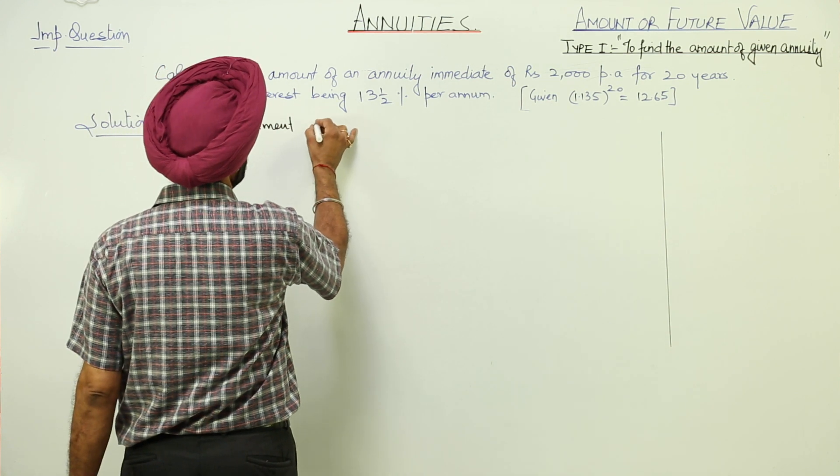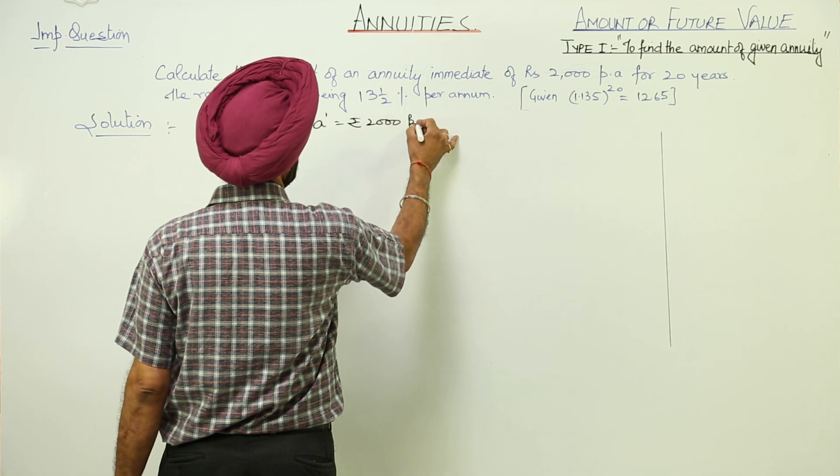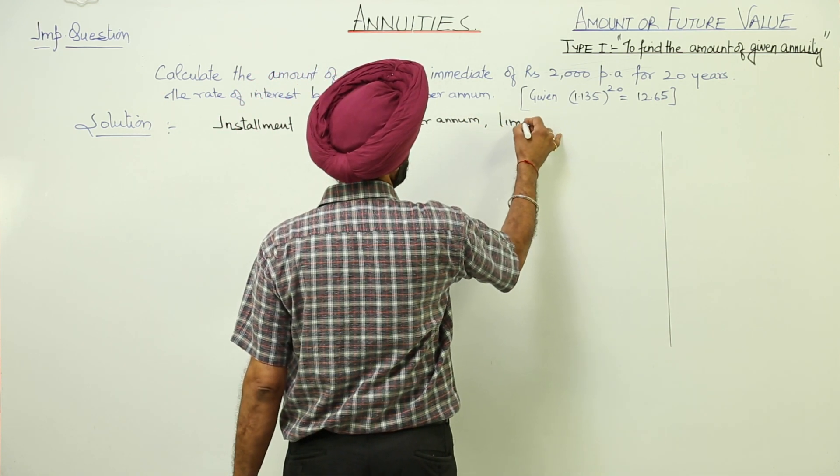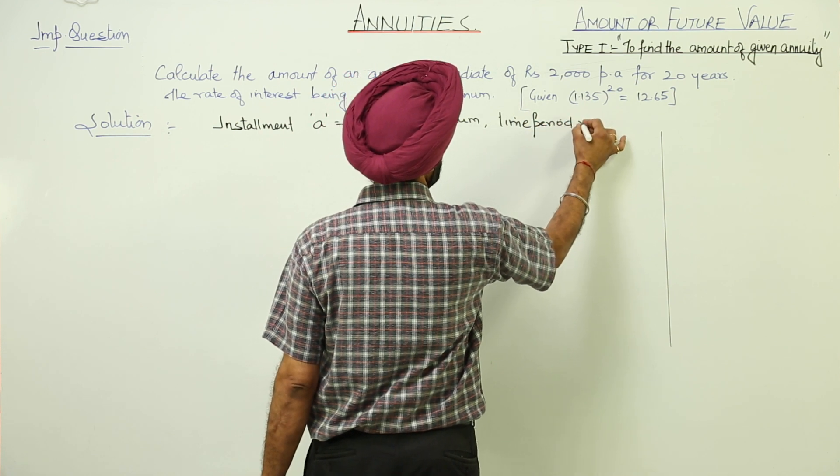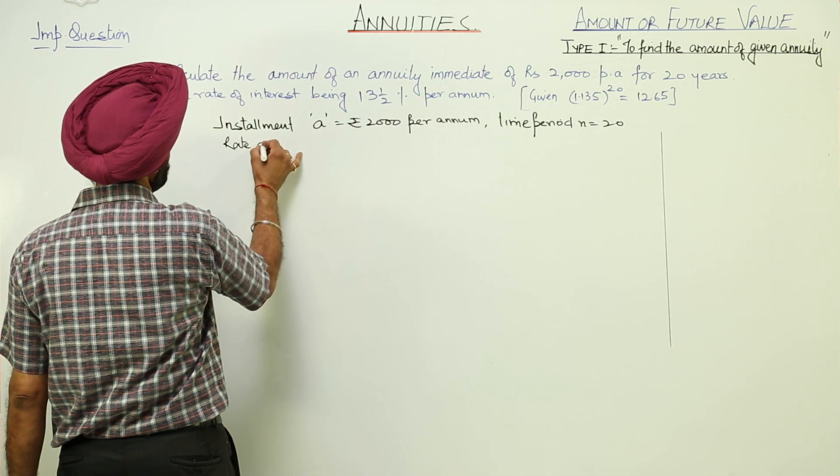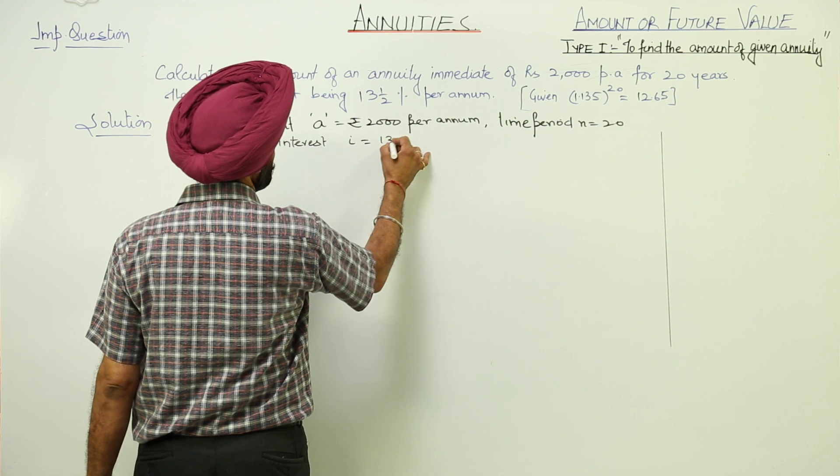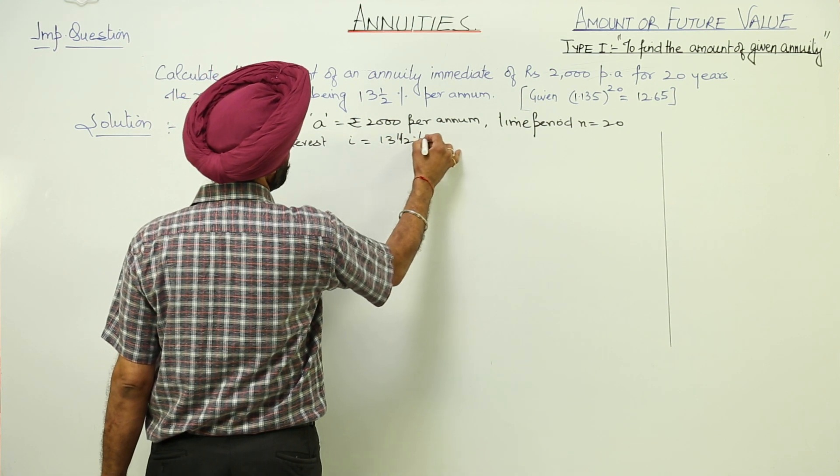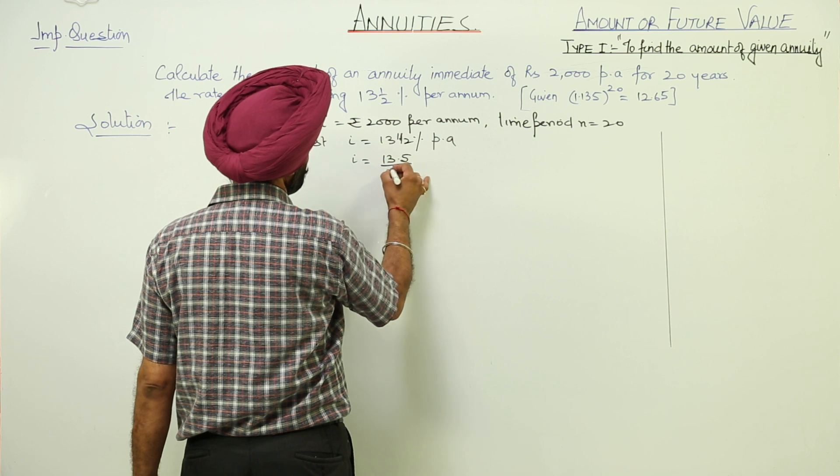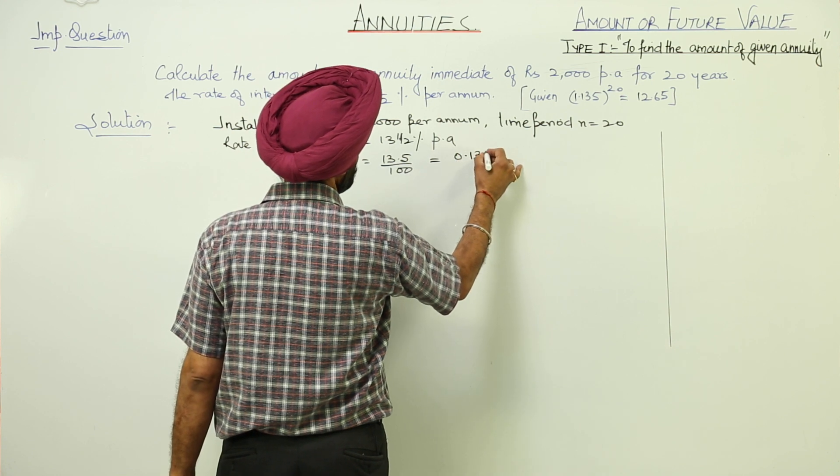Now, installment A is equal to rupees 2000 per annum. Time period N is equal to 20. The rate of interest i is equal to 13 and half percent per annum, or i can be written as 13.5 upon 100, or this can be written as 0.135.